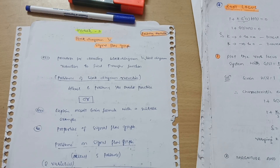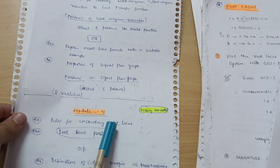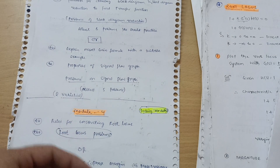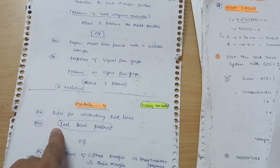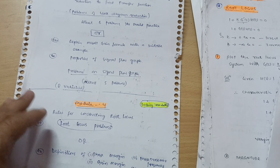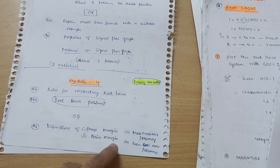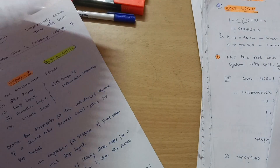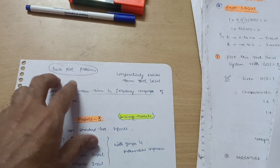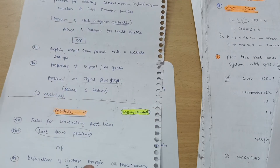Module 4 is Root Locus. There are rules for constructing the root locus, and root locus problems may carry 14 to 15 marks, sometimes up to 20 marks. In the other part, there are definitions like phase margin, gain margin, phase crossover frequency, and gain crossover frequency, as well as problems on Bode plot. Bode plot problems are comparatively easier than root locus.